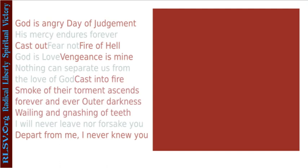What we saw in the previous video used the idea of a treasure map on cereal boxes with a piece of red film — when you place the red film over it, all the noise clarifies and you can see the treasure map. I've made my own version here with concepts from the Bible: God is angry, day of judgment, his mercy endures forever, cast out, fear not, fire of hell, God is love, vengeance is mine, nothing can separate us from the love of God, cast into fire, smoke of their torment ascends forever and ever, outer darkness, wailing and gnashing of teeth, I will never leave you nor forsake you, depart from me I never knew you. It seems like a rather confusing message — there's what clearly seems to be contradiction.